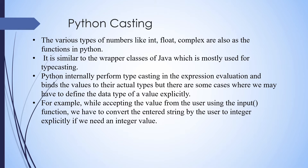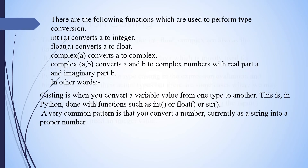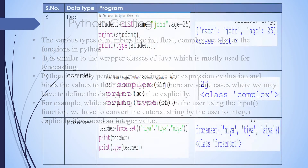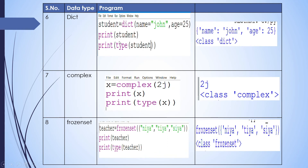But there are some cases where we have to define the data type of a value explicitly. As we discussed in earlier slides, we can explicitly set a specific data type, like string. For example, teacher is equal to frozenset with values NIA, TIA, CI — using a constructor function.